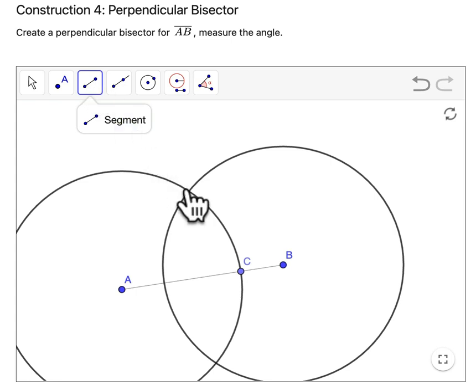If we set up a segment here, we can do a line or a segment, but right now we only have the segment tool and ray tool available. This segment right here is now perpendicular to AB.